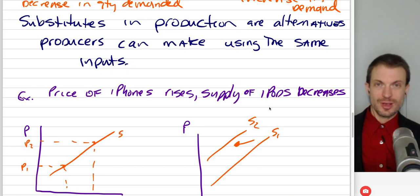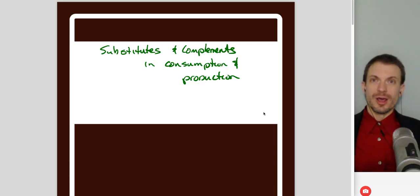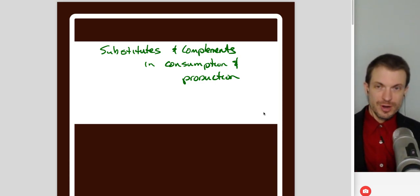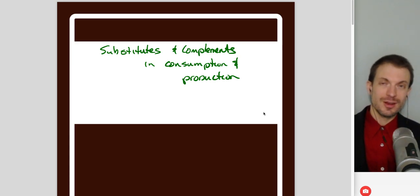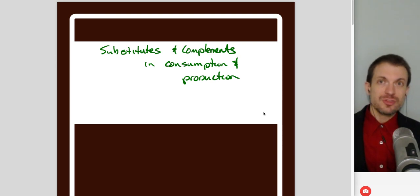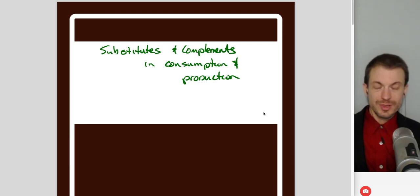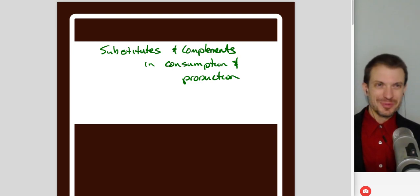To wrap this up: when you get a change in price, for the good whose price changed, you can only get a change in quantity — either quantity demanded or quantity supplied. From the perspective of related goods, that price change acts as a shifter. The change in the price of a related good can be a supply or demand shifter depending on whether they're substitutes or complements in production or consumption. Hope this helps.